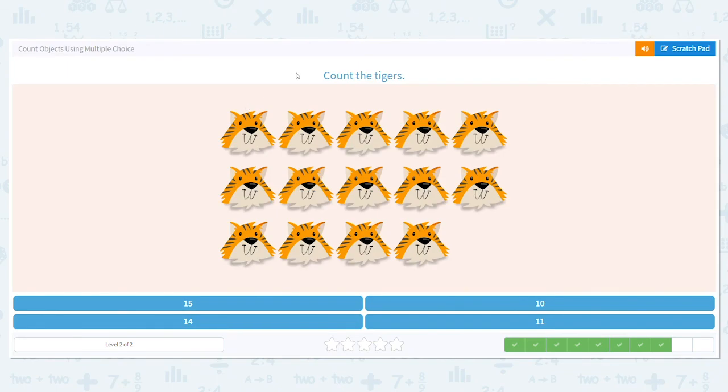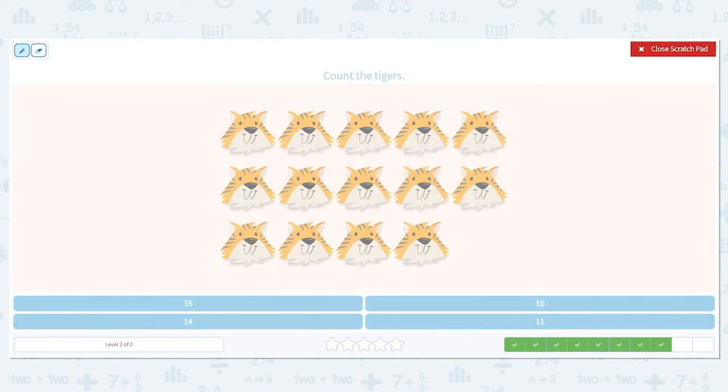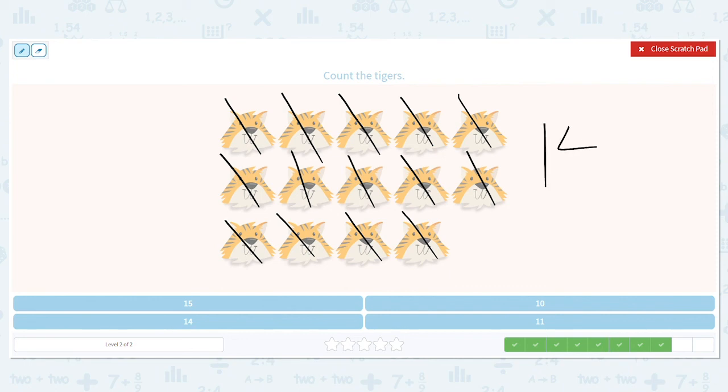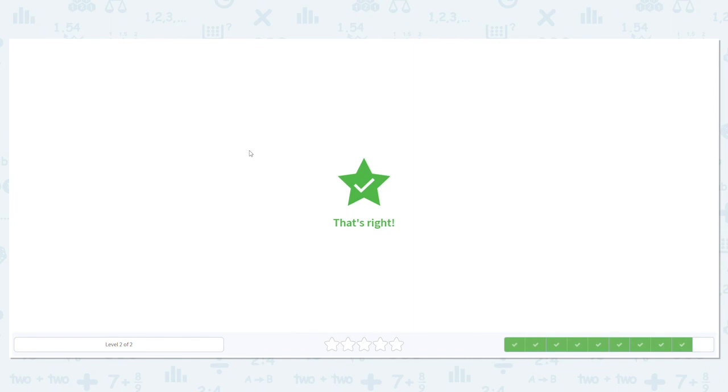Let's do another one. Count the tigers. It's either 15, 10, 14, or 11 tigers. Go ahead and count out loud as I count in my head, and I will mark them off for you. How many did you get? Did you get 14? I hope you did because that's the correct answer. All right, let's do one more.